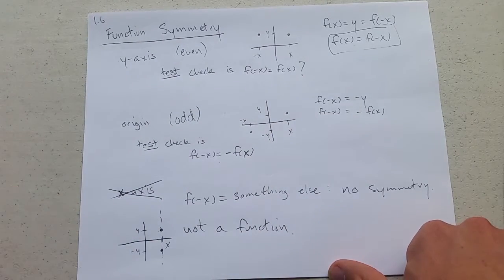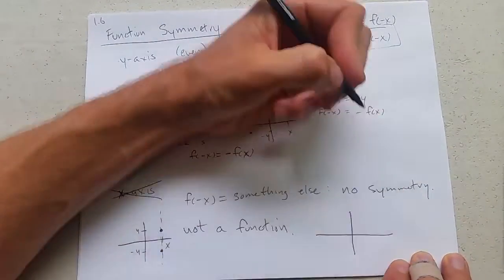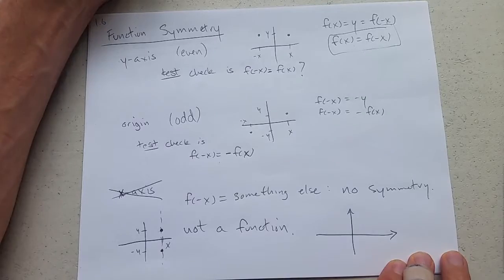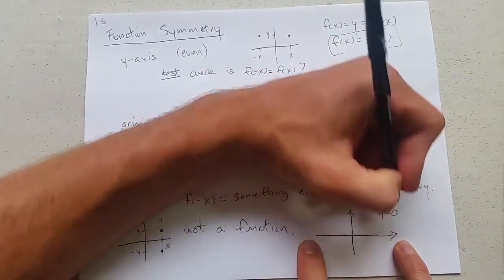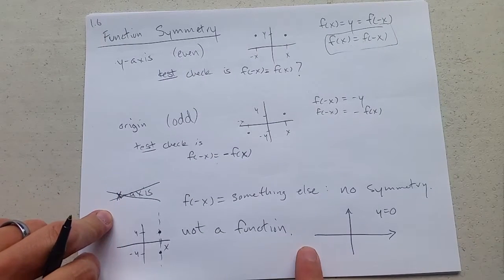So because of that, functions don't have x-axis symmetry. There is one exception and I'll graph that function. Here's the graph of the one function that has x-axis symmetry. What is the equation? Y equals zero. So that's the one function that has x-axis symmetry.